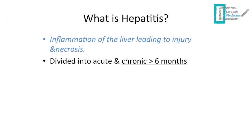What is hepatitis? Basically, it's inflammation of the liver leading to injury and necrosis. It can be divided into acute and chronic according to the duration — more than six months is considered a chronic infection.